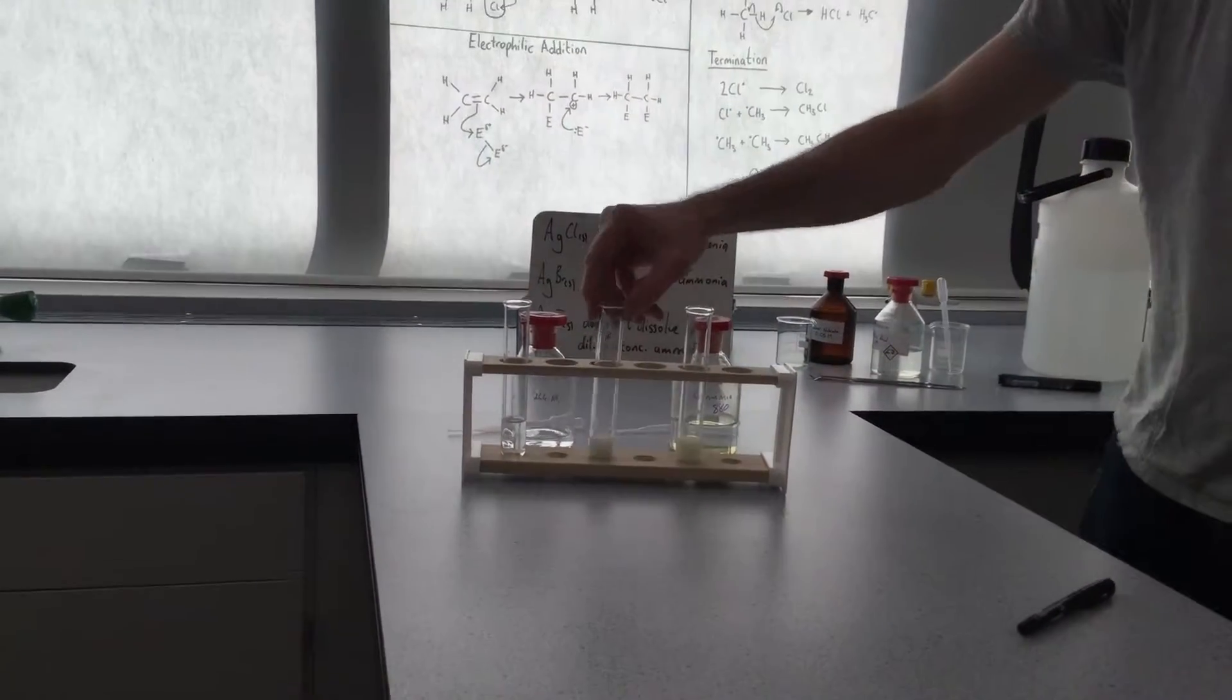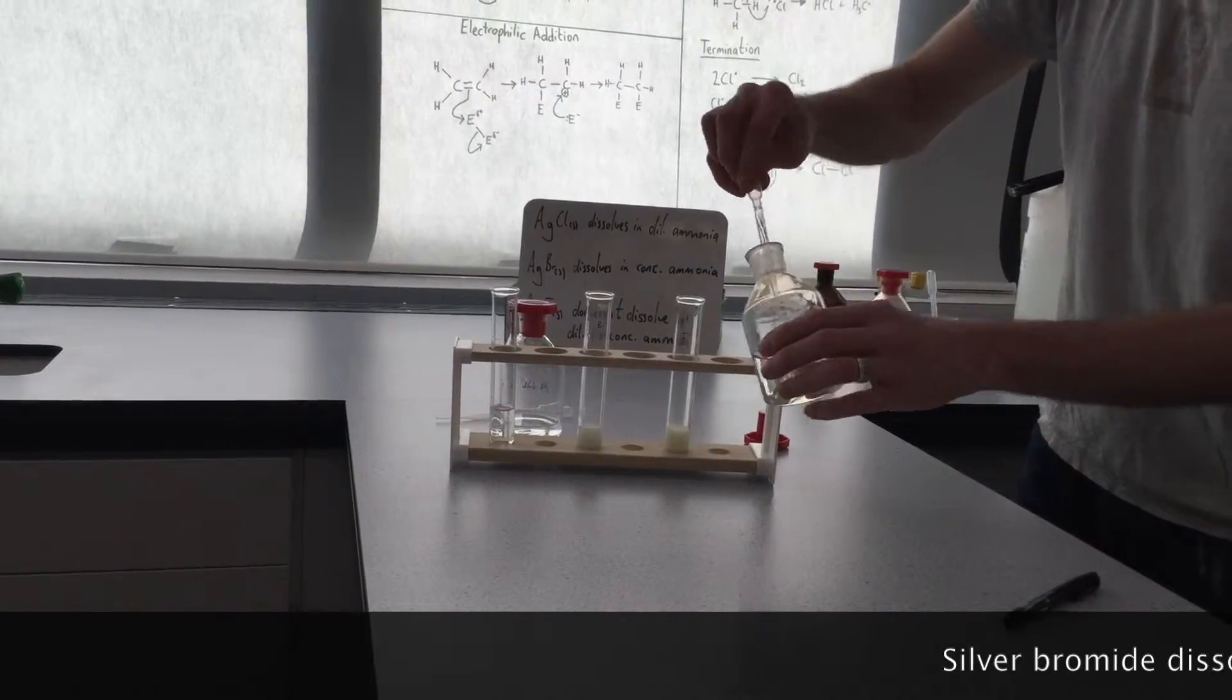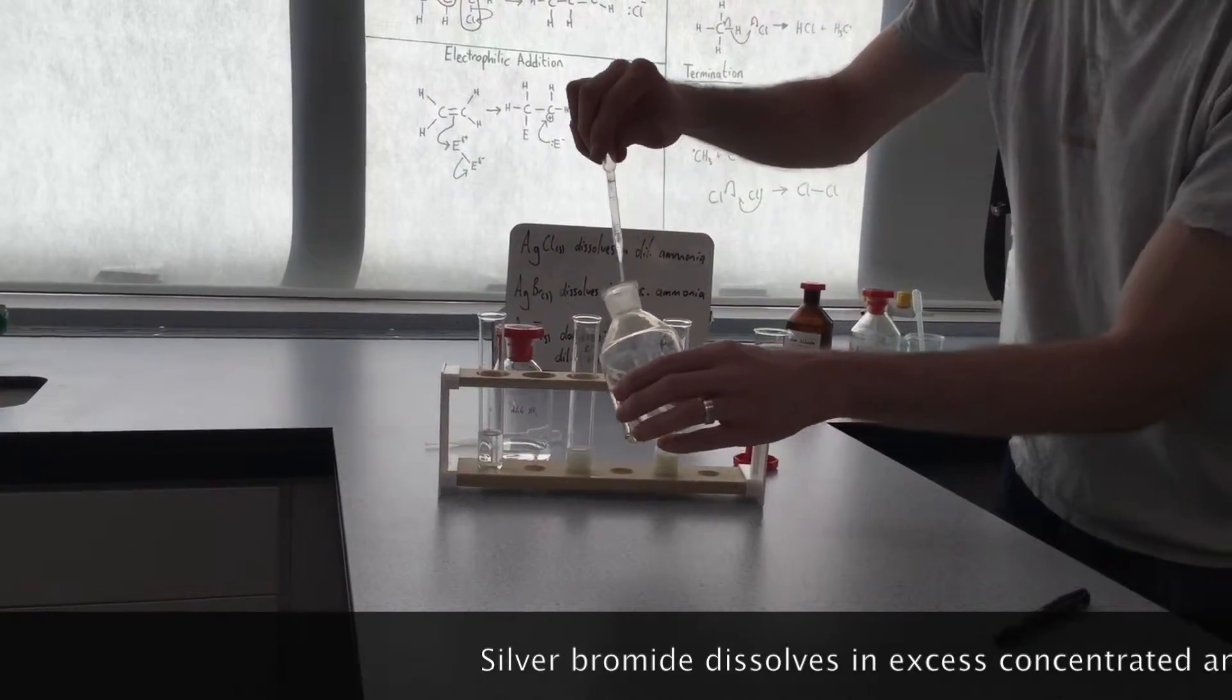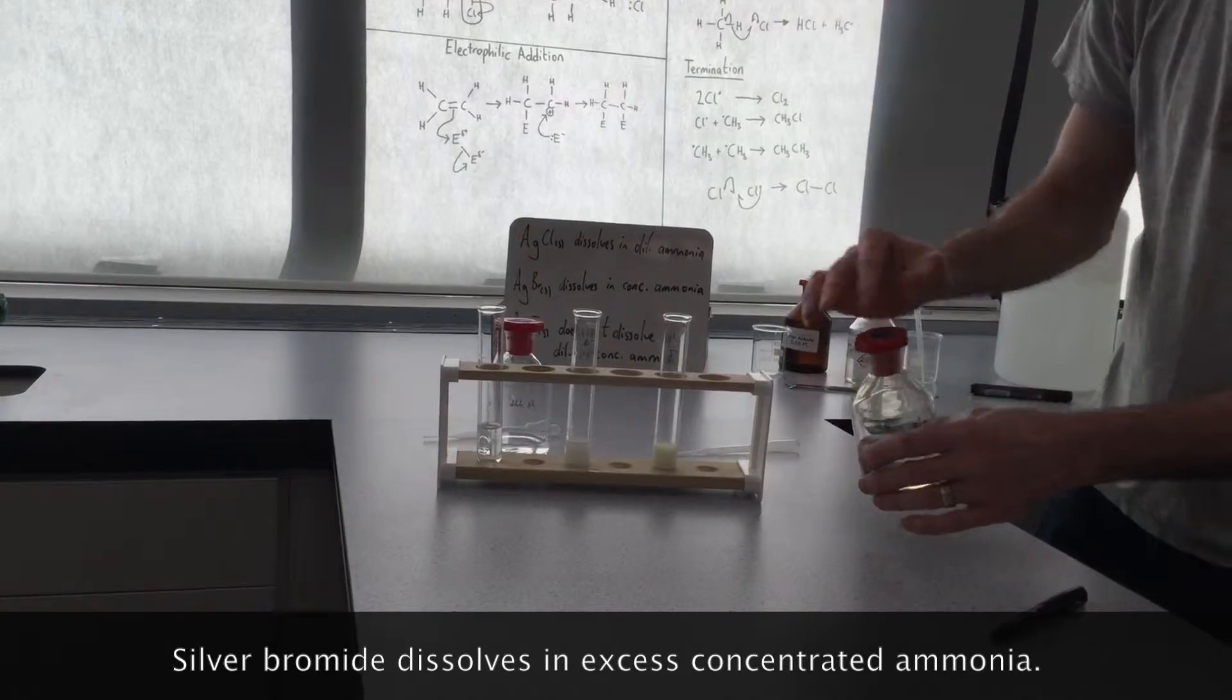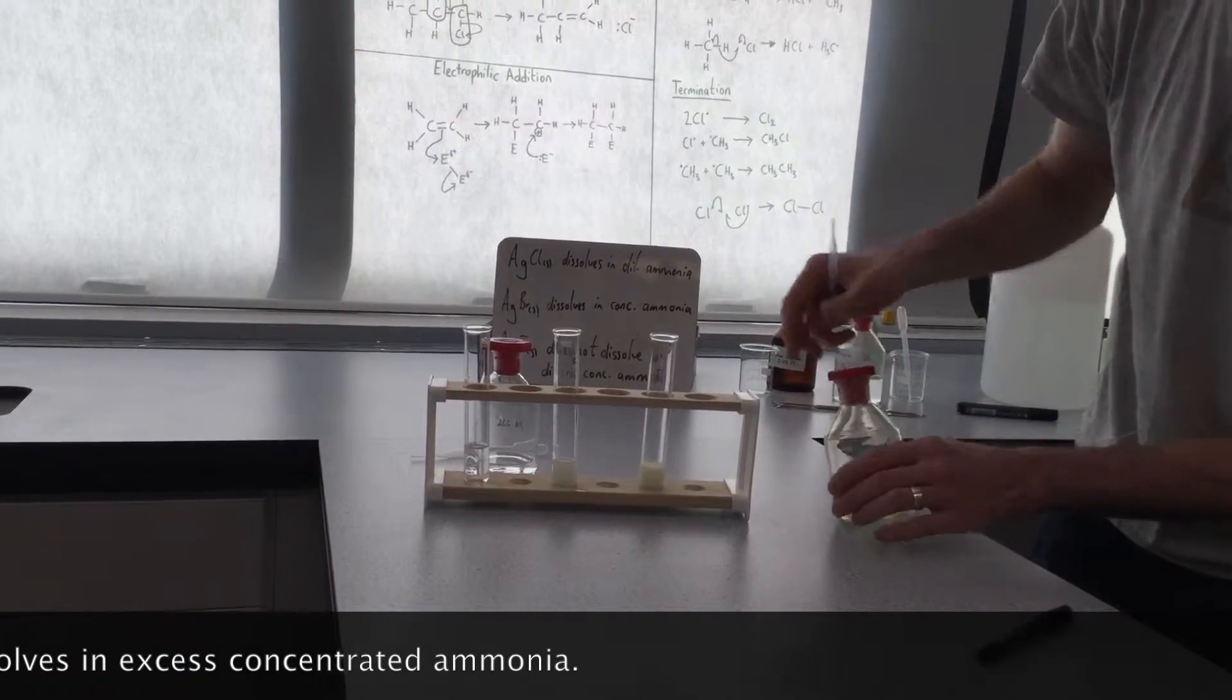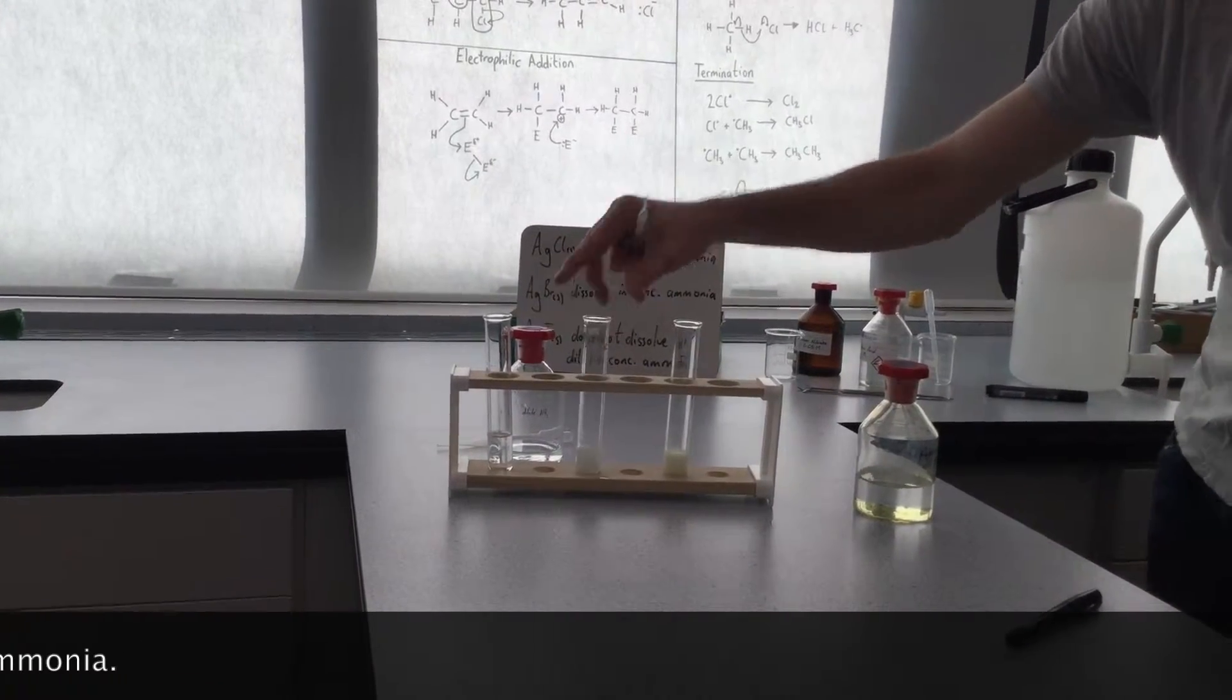So as a further test, what you can do is add some concentrated ammonia to the bromide and the iodide to see if they redissolve. So if I add some concentrated ammonia to the bromide, there it is, it's going slowly. So what should happen is that the bromide will redissolve in concentrated ammonia.